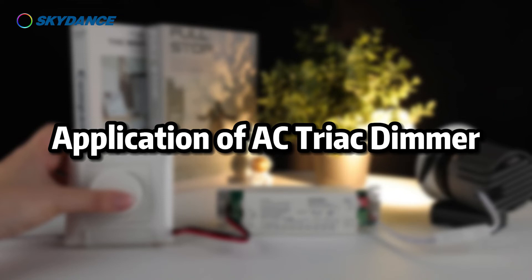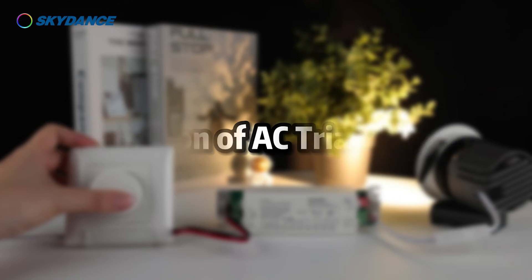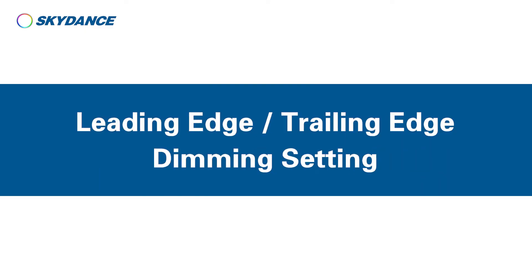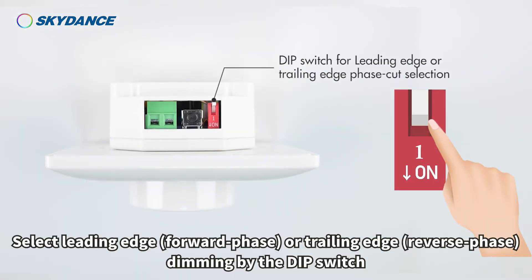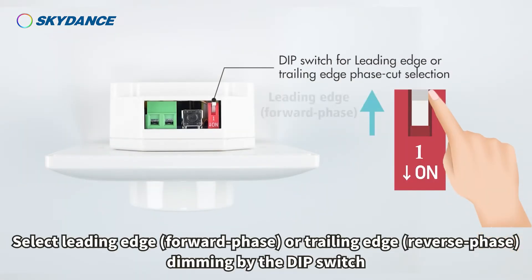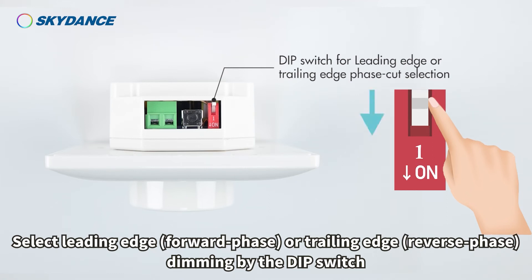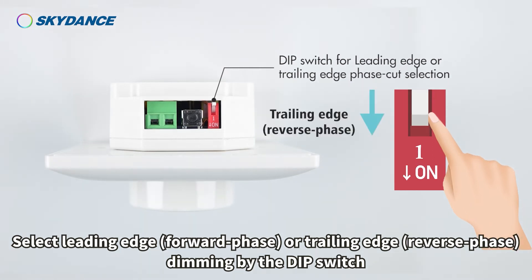Application of AC triac dimmer. Select leading edge (forward phase) or trailing edge (reverse phase) dimming by the DIP switch.